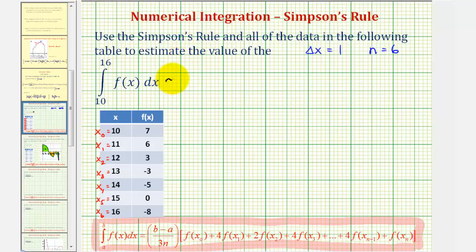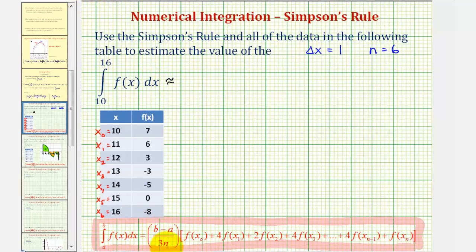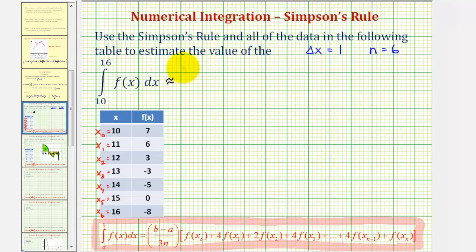Our approximation is going to be, we have the quantity b minus a divided by three n, so that would be sixteen minus ten divided by three times n, which is six.